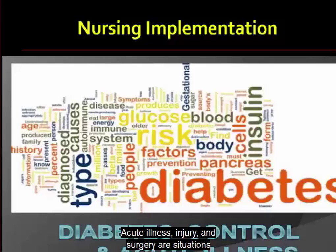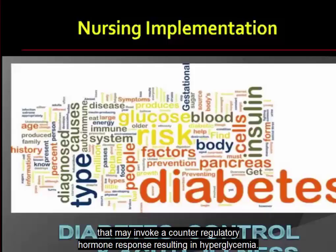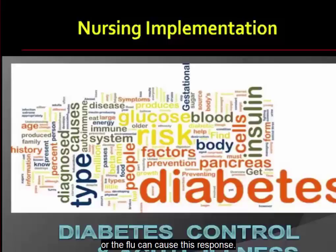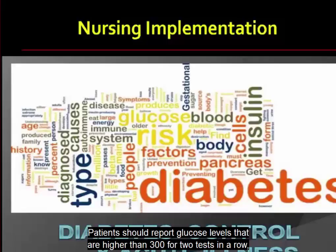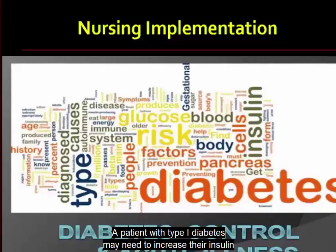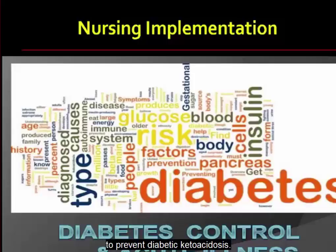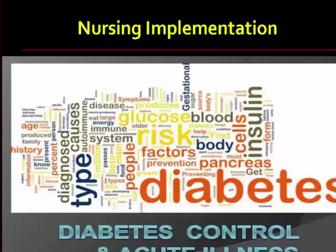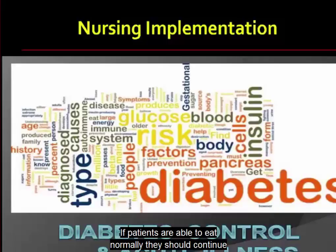Acute illness, injury, and surgery are situations that may evoke a counter-regulatory hormone response resulting in hyperglycemia — even common illnesses like viral upper respiratory infections or the flu can cause this response. Patients should report glucose levels higher than 300 for two tests in a row, or moderate to high urine ketone levels, to their healthcare provider. A patient with type 1 diabetes may need to increase their insulin to prevent diabetic ketoacidosis. Food intake is important during illness; if patients are able to eat normally, they should continue their regular meal plan while increasing non-caloric fluid intake.